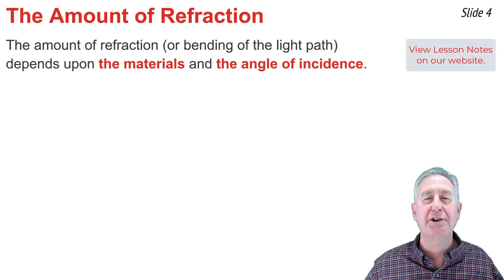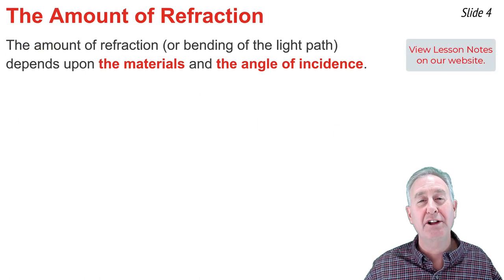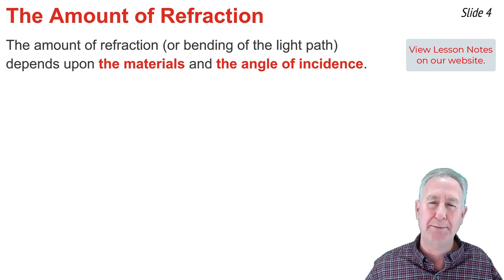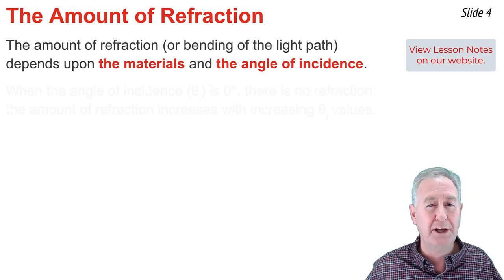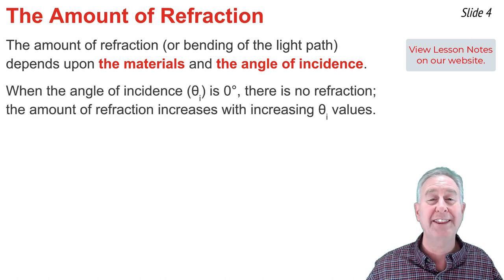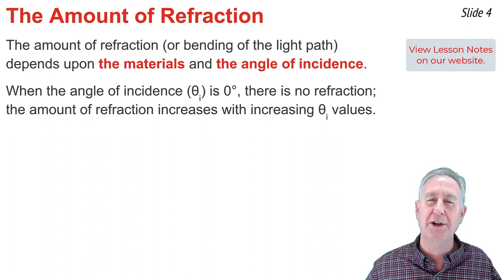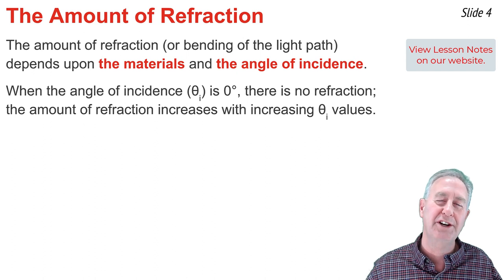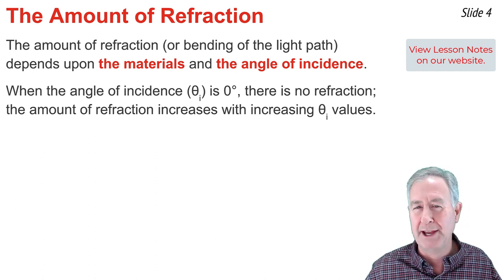The amount of refraction that occurs at the boundary depends upon two variables: the angle of incidence and the materials located on opposite sides of the boundary. When light approaches the boundary while traveling along the normal line, the angle of incidence is zero degrees and there is no refraction whatsoever. But as the angle of incidence is increased from zero degrees to larger and larger values, the amount of refraction increases dramatically.